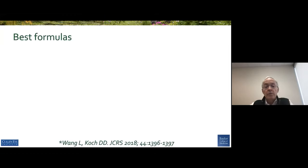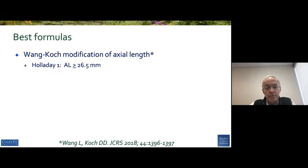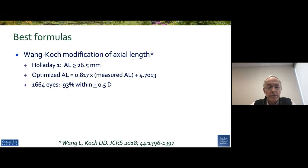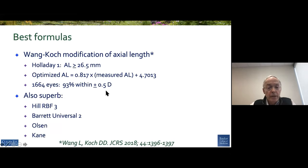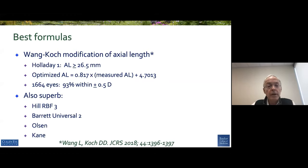We're doing better with long eyes. We started the ball rolling with our modification of axial length, and we looked at recently 1,600 eyes and got 93% within a half diopter. Also superb results are readily available in the Hill RBF 3, the Barrett Universal II, the Olson formula, and the Kane — all have reported good outcomes in long eyes.